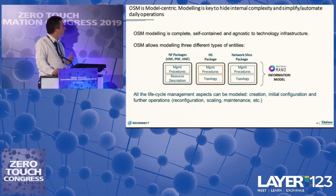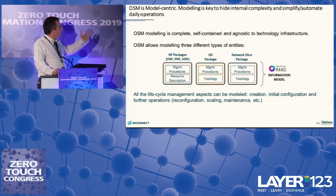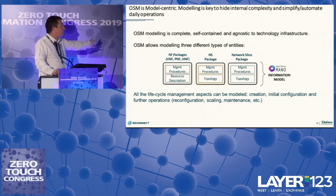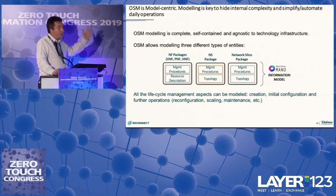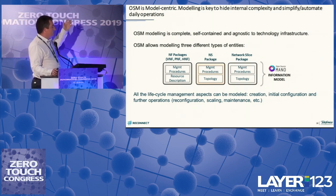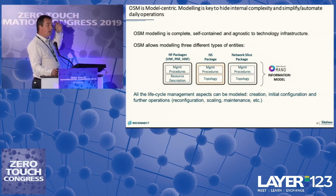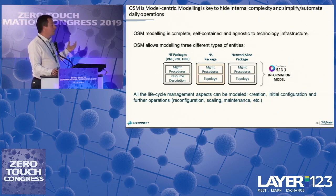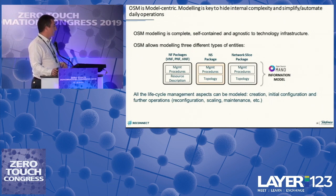OSM could be called open source modeling for the network, not just open source manual. OSM offers modeling of three different types of entities: network functions that can be virtual, physical, or hybrid — a combination of physical deployment units and virtual deployment units — as well as network services and network slices. OSM works with packages that contain two main aspects: the management procedures to deal with the lifecycle of the construct, and the description of the resources and internal topology.